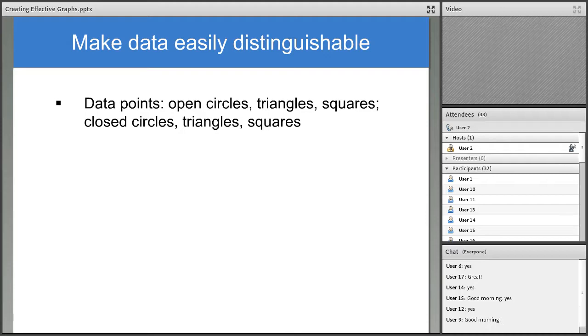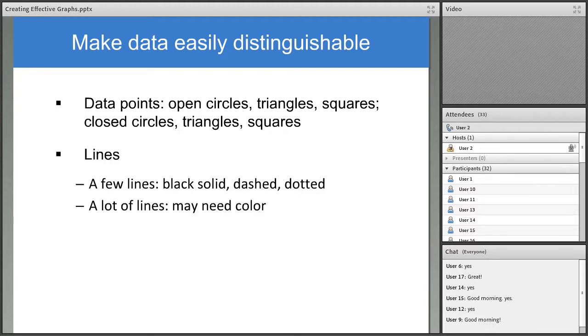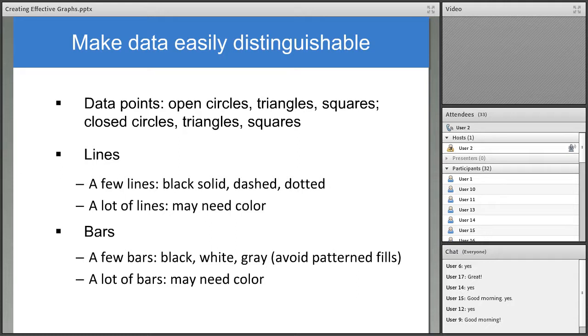To distinguish data in graphs, use distinct symbols, lines, and patterns. For data points, if there are two dependent variables, open and closed circles are easy to distinguish. If plotting multiple dependent variables, try open circles, triangles, squares, and closed circles, triangles, and squares. For lines on line graphs, use black, solid, dashed, and dotted lines. Or they can be all solid black if the lines don't intersect and the lines are labeled rather than using a key. But if you have a lot of lines, you may need to use different colors. To distinguish between bars on bar graphs, use black, white, and distinct shades of gray. Patterned or textured fills were used in the past because they reproduced better than solid gray. But with modern digital files, many journals prefer gray and discourage the use of patterns, which can look busy. And again, if you have a lot of bar subcategories, you may need to use different colors.